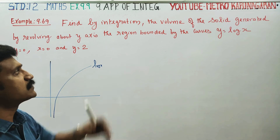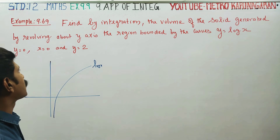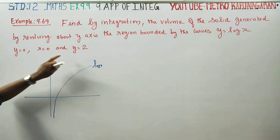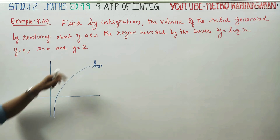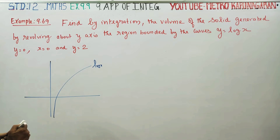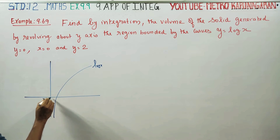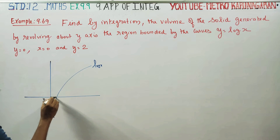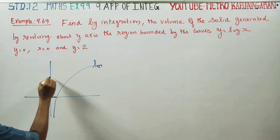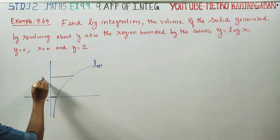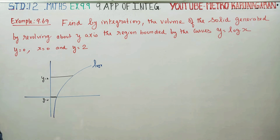The boundaries are y is equal to 0 and y is equal to 2. So the limits of integration are y = 0 to y = 2. This defines the volume we need to find by integration.